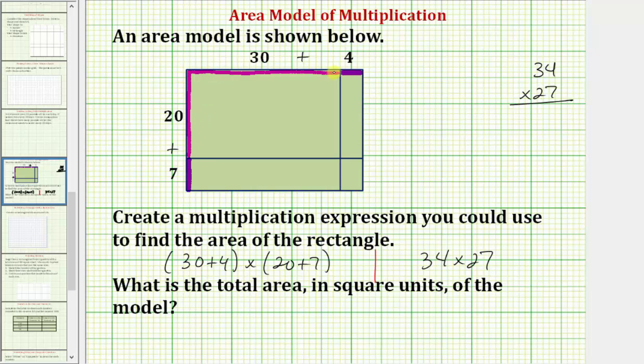So notice how this rectangle here is 30 units by 20 units, and therefore the area is going to be 20 times 30, or 600 square units. The rectangle here is 30 units by 7 units, and therefore the area is going to be 30 times 7, or 210 square units. This rectangle here is 4 units by 20 units, and therefore the area is 4 times 20, or 80 square units.